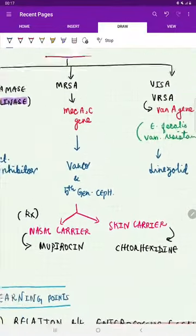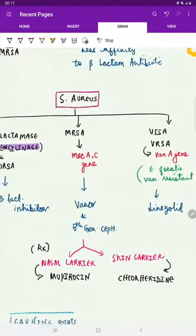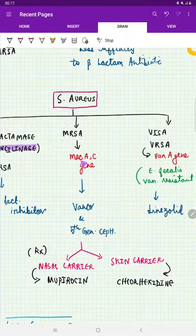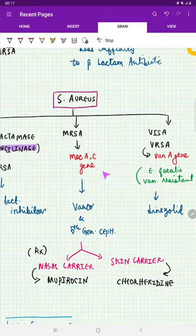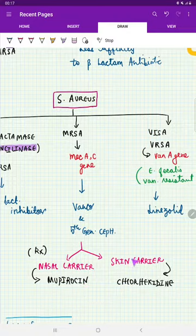Now coming to the summary. In Staphylococcus aureus, there is beta-lactamase production and can be tackled with beta-lactamase inhibitor. MRSA, which is by MecA, MecC gene, tackled by Vancomycin, Ceftobiprole. And to eliminate the carrier, that is nasal carriers of MRSA, we can give Mupirocin. For skin carriers, we will give Chlorhexidine.